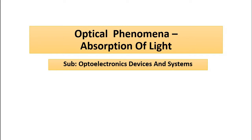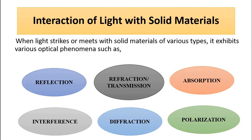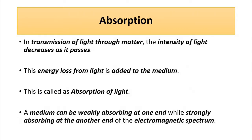The different interactions of light with solid materials we discovered in that. Basically, the phenomenon of absorption is that when light travels through matter, the intensity of light as it passes through that material keeps on decreasing. That loss of energy, which is lost because of the decrease in intensity, is added to that material, to that medium.